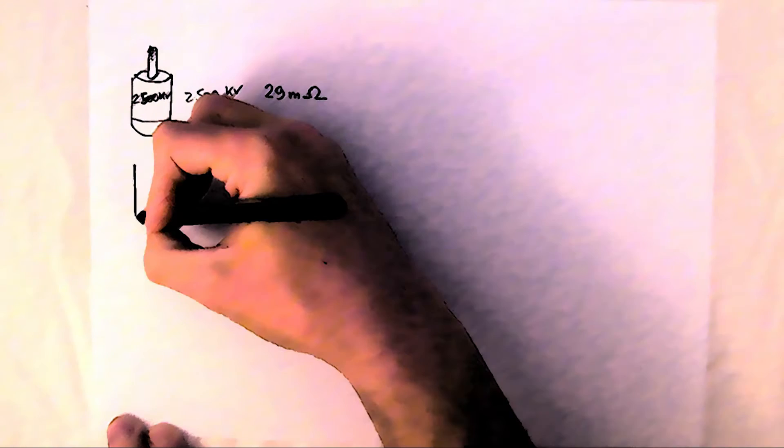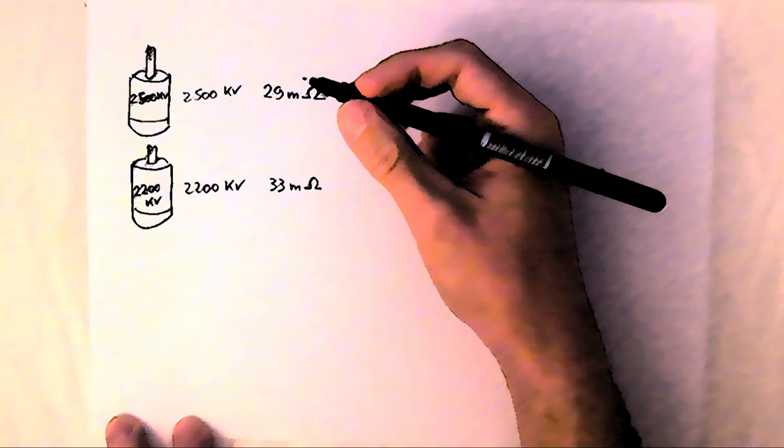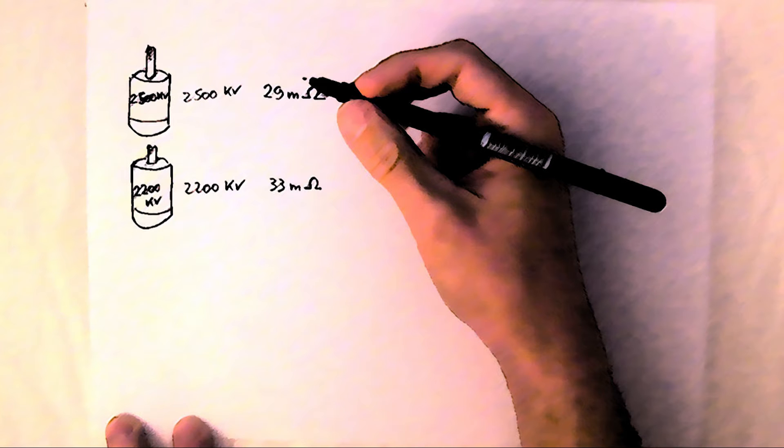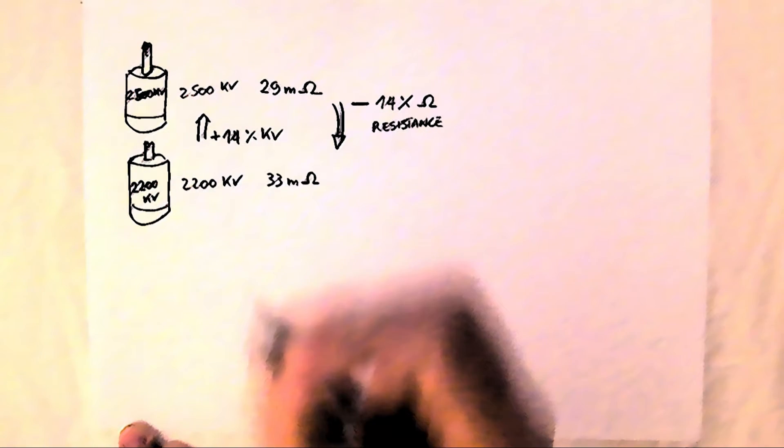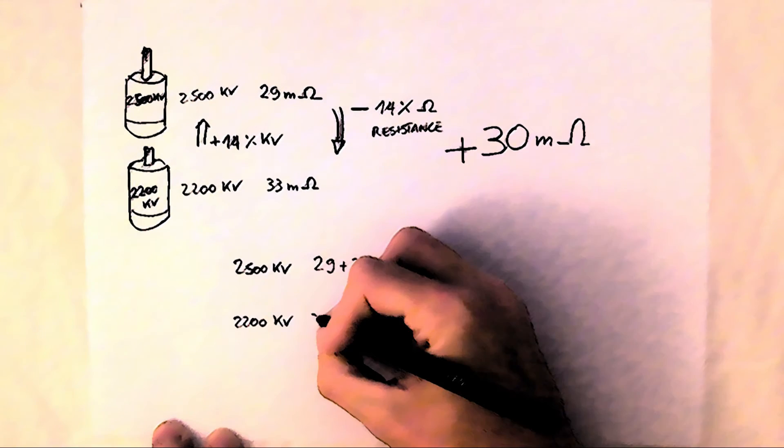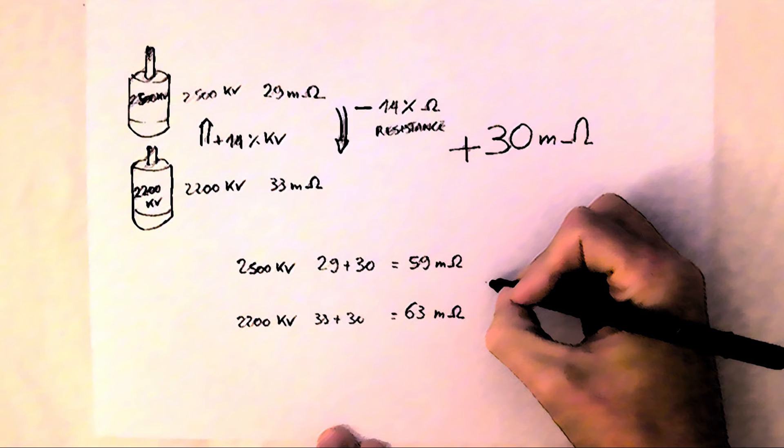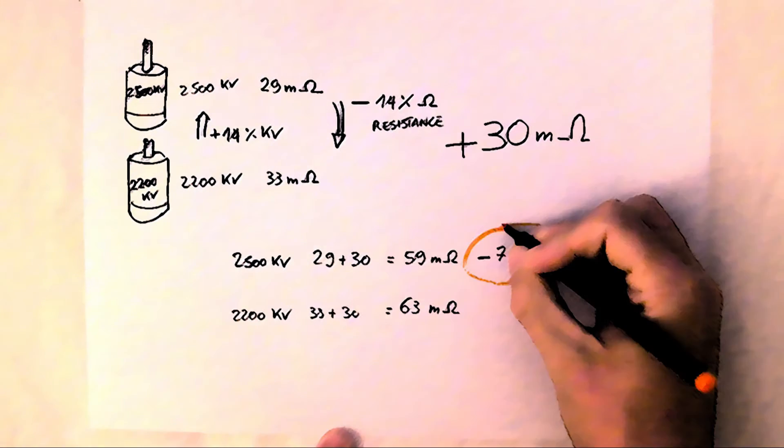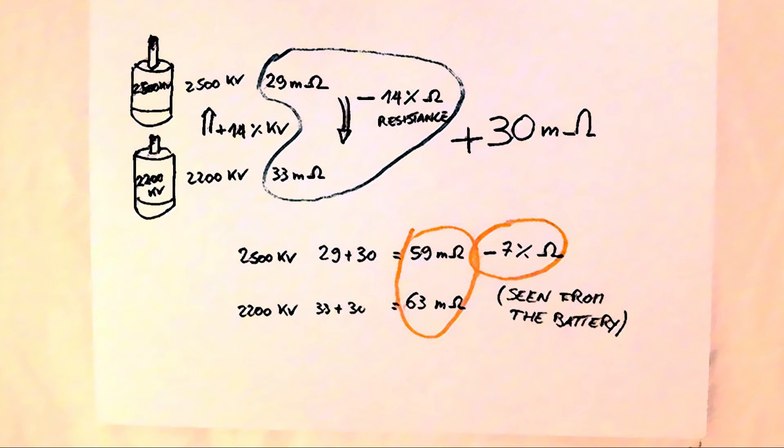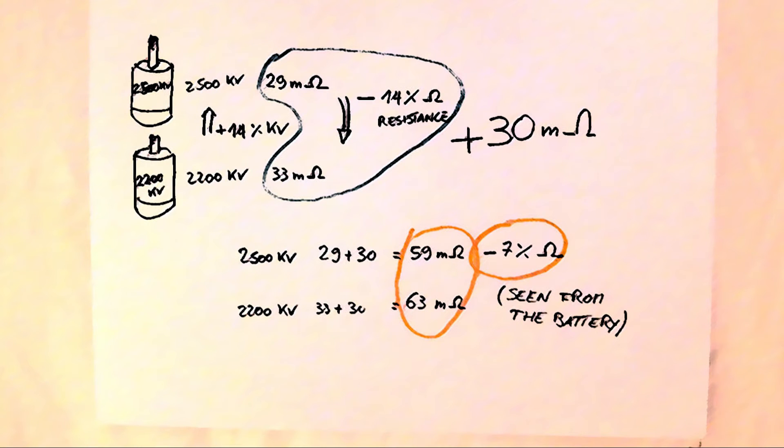Let's make a quick example. I quote these numbers from a famous manufacturer. We have two motors in the same series: 2500 kV and 2200 kV. For an approximate 14% increase in kV, we get a 14% reduction in electrical resistance. But if we add the resistance of the circuit between the motor and battery, which is in series between them, the higher kV motor is seen as just 7% less resistance from the battery.